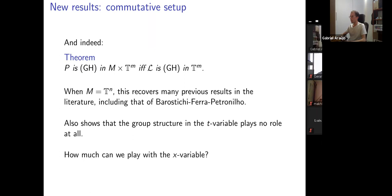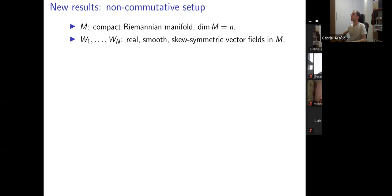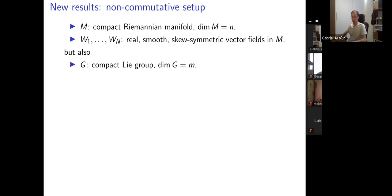Now we want to change the second factor as well: M remains a compact Riemannian manifold with real smooth skew-symmetric vector fields W, but we replace the second torus by a compact Lie group G — dropping commutativity, keeping the group structure which may be non-abelian.